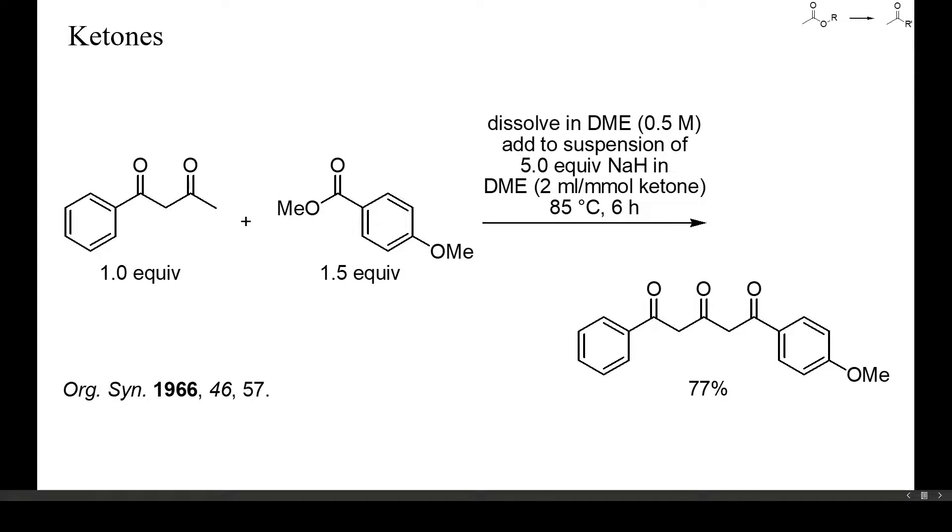In this case, the di-anion was generated by treatment of the starting diketone with an excess of sodium hydride. And because the electrophile was a non-enolizable benzoate, enolate formation and acylation could be conducted in one step.